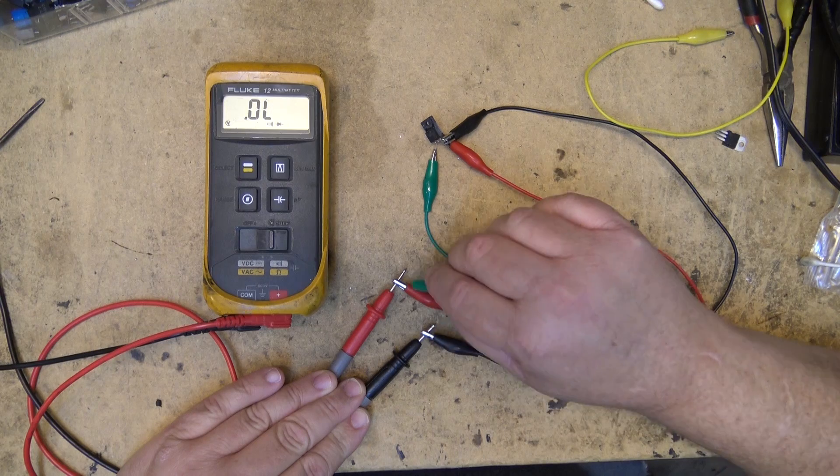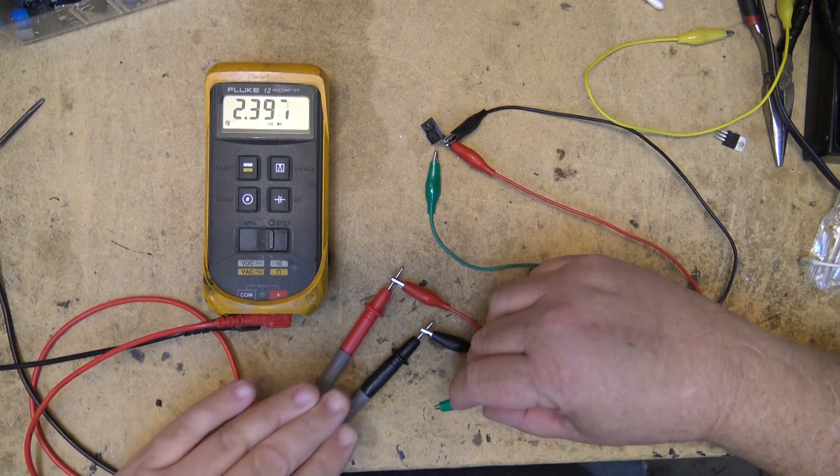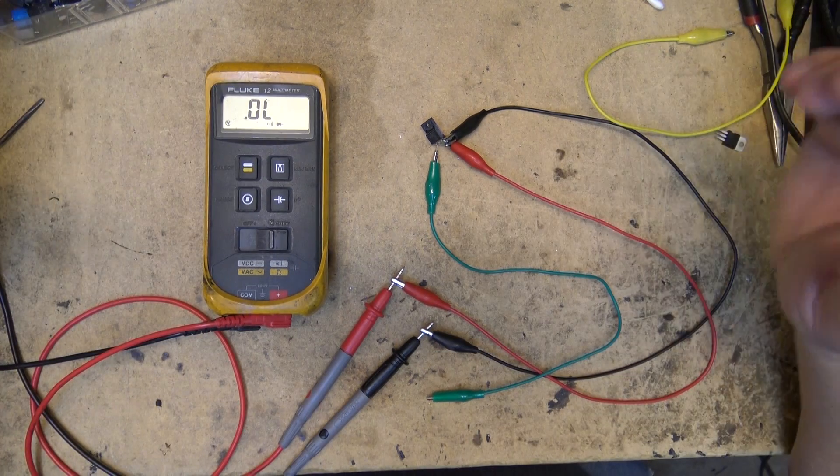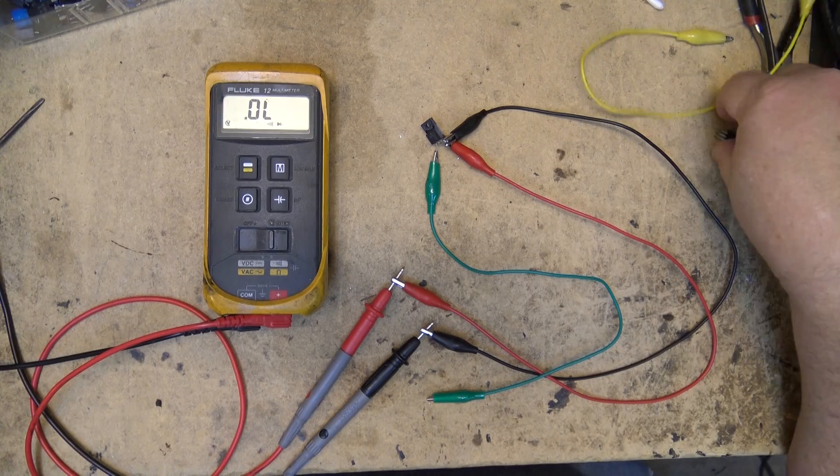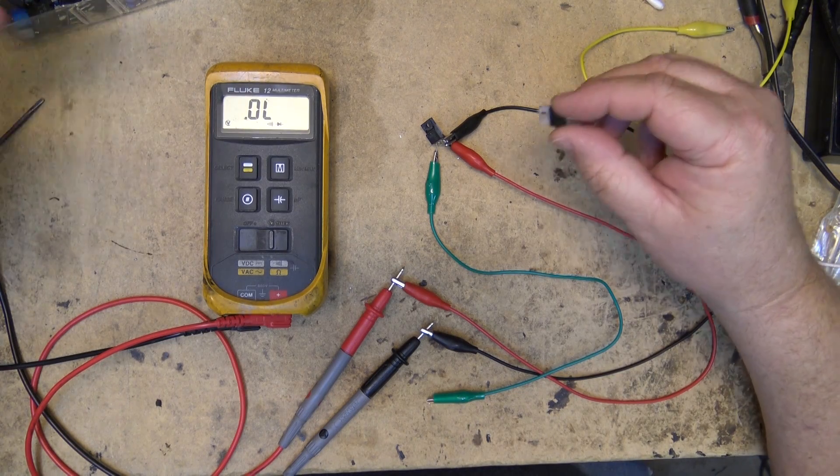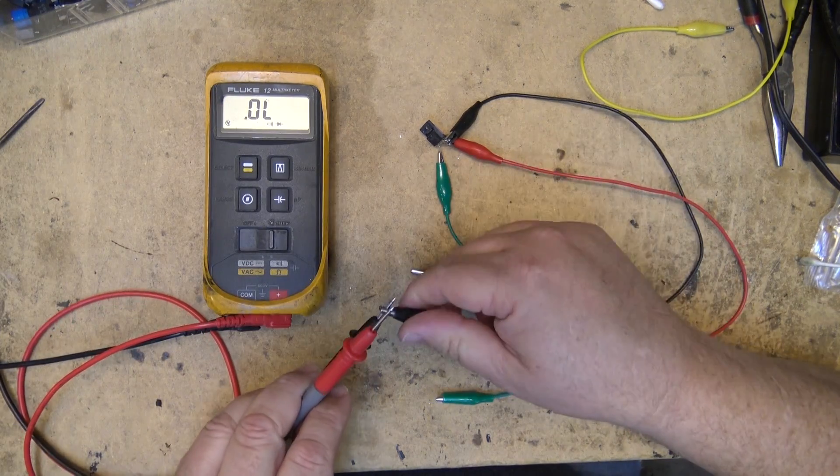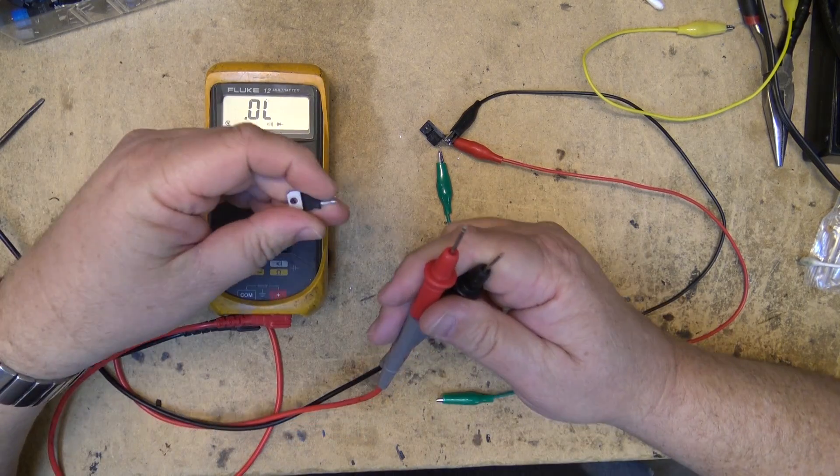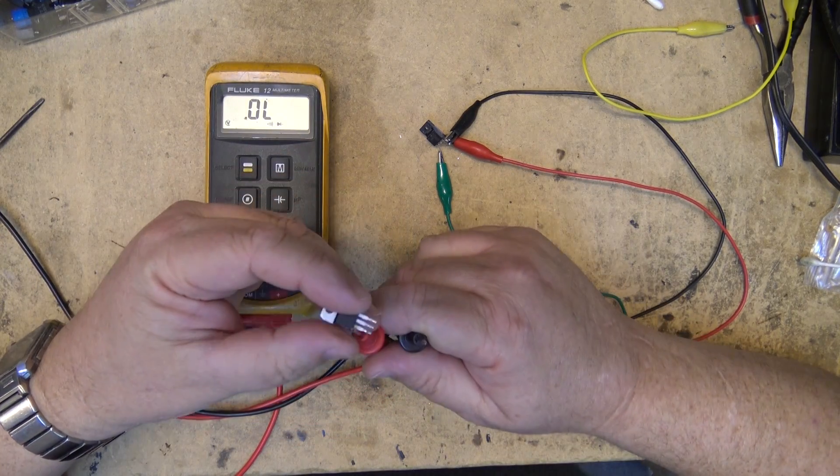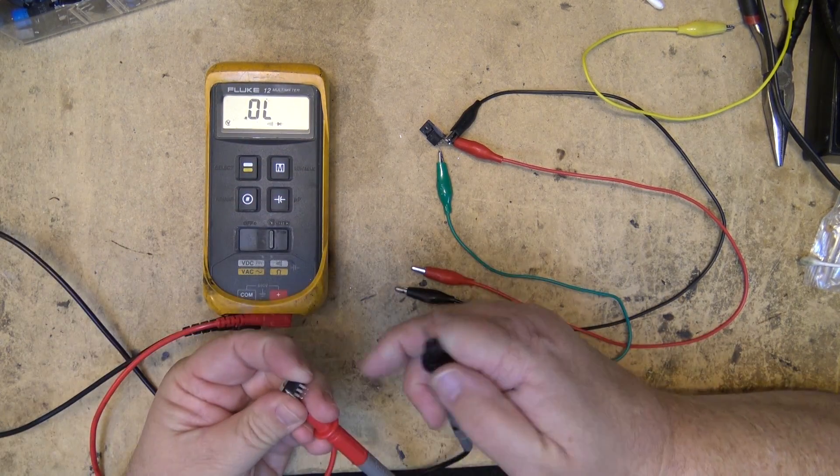So when a MOSFET blows, it shorts. It'll usually short source to gate or drain to gate, or they can short every which way.